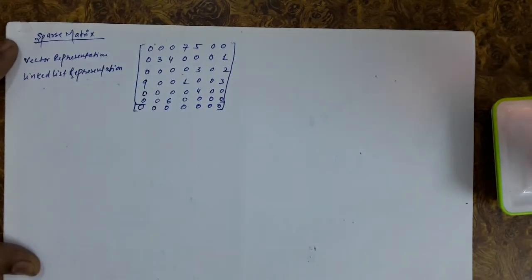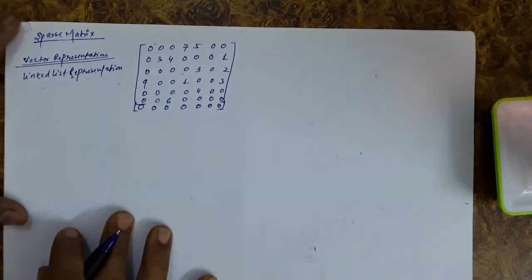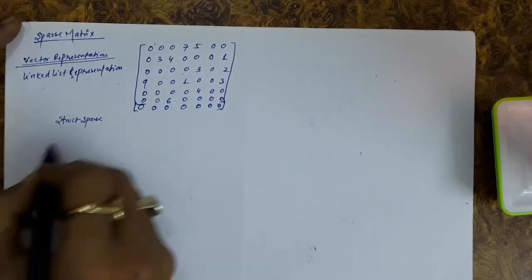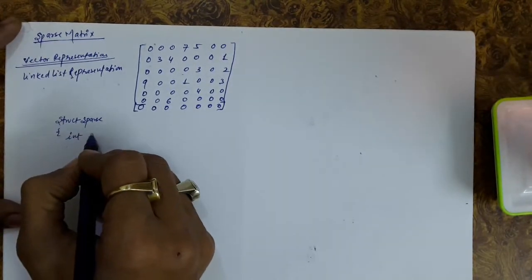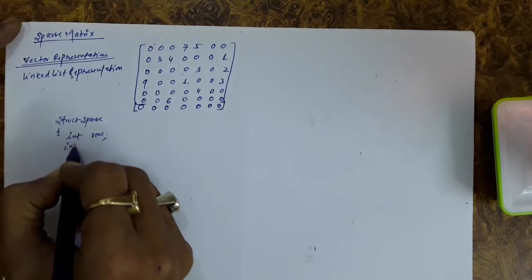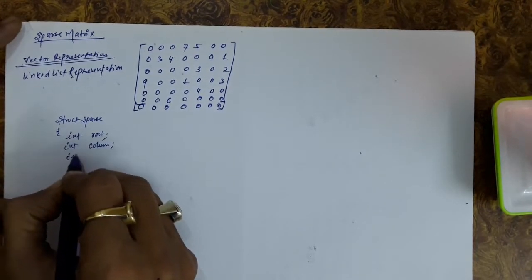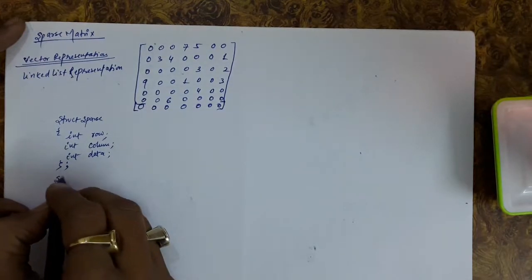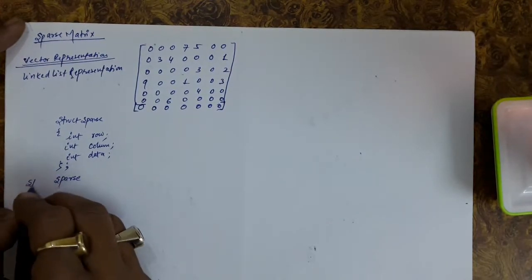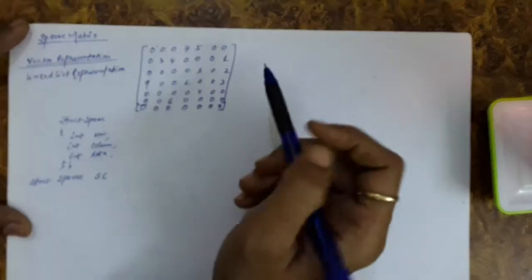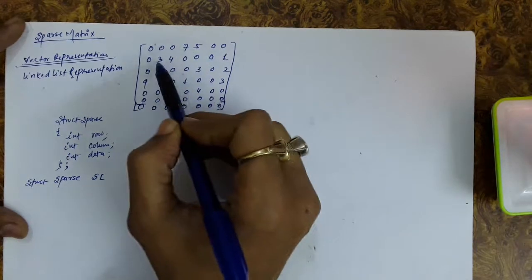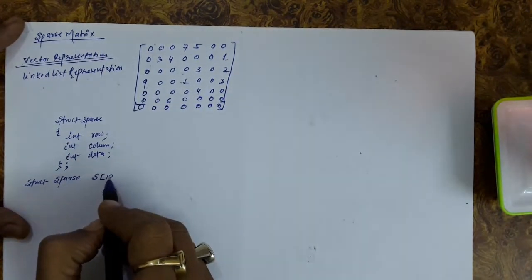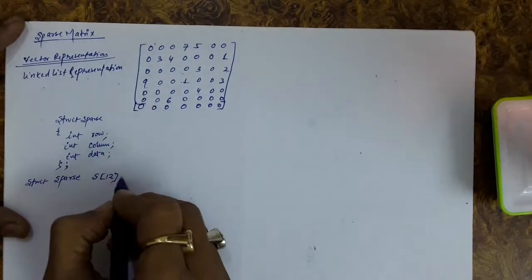So if we follow the vector representation, in that case we will make a structure — let us call it 'sparse' — with integer row number, integer column number, and integer data. Then we take a 1D array of this structure: struct sparse s. The total number of non-zero entries will be the size of this array — 1, 2, 3, 4, 5, 6, 7, 8, 9, 10, 11, 12 — so there will be 12 elements in this array.